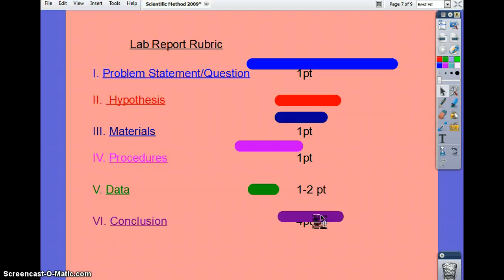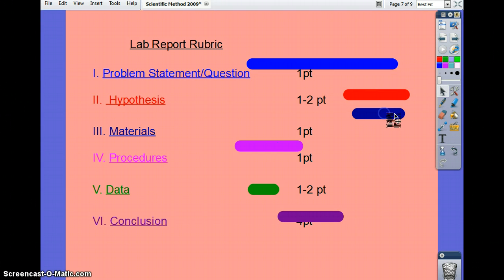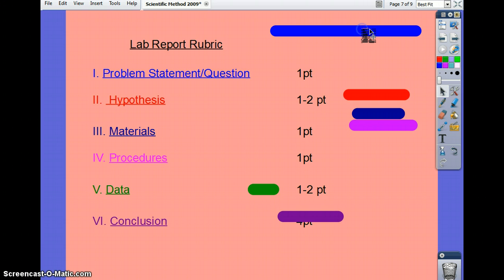Materials, sometimes you can underline them on procedures, depends. But if you notice the point system, you get one point for rewriting your problem statement. And I want it Roman numeral one, problem statement, underline and the statement underneath. Like this. Okay? Roman numeral two, hypothesis, statement underneath. So on and so on.